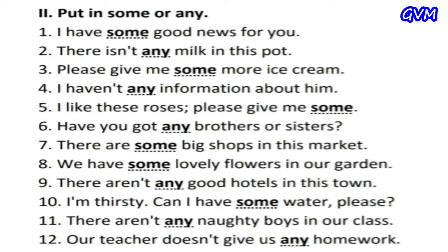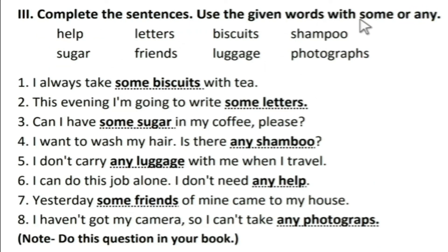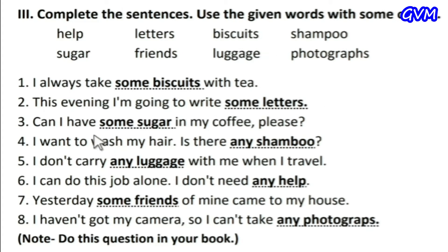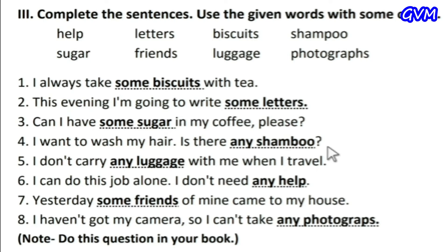Next: complete the sentences using the given words with 'some' or 'any'. The clues are: help, letters, biscuits, shampoo, sugar, friends, luggage, and photographs. First: 'I always take ___ with tea' — the correct answer is 'some biscuits'. Second: 'this evening I am going to write ___' — the correct answer is 'some letters'. Third: 'can I have ___ in my coffee please?' — the correct answer is 'some sugar', because we put sugar in coffee.